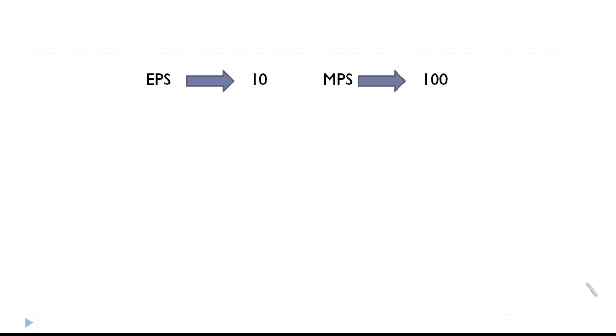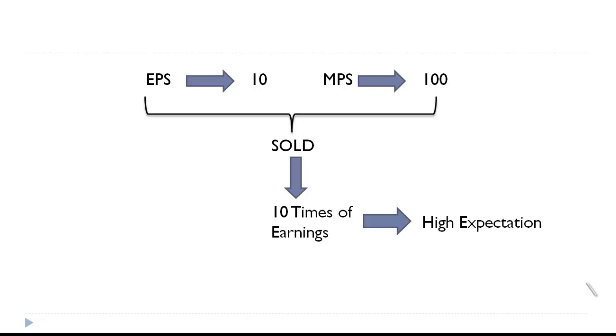It is sold 10 times its earnings. Why should it be sold 10 times its earnings? Probably there could be high expectations that this share can do very well in the future, so people are ready to buy at a high price. Or the other reason could be that the company had low profit.